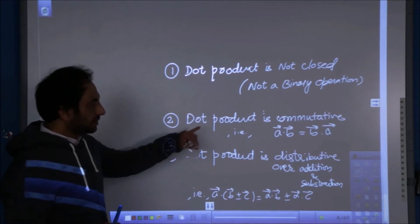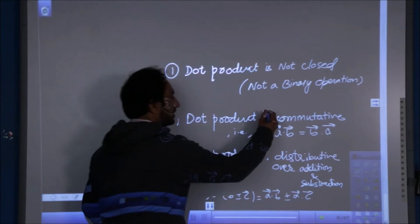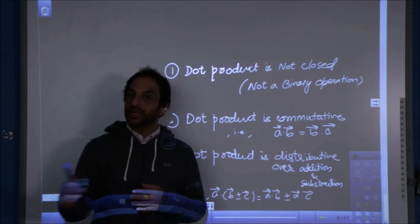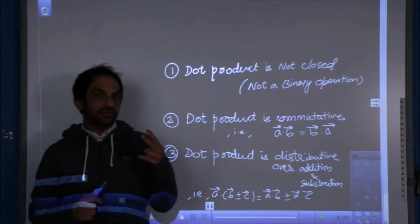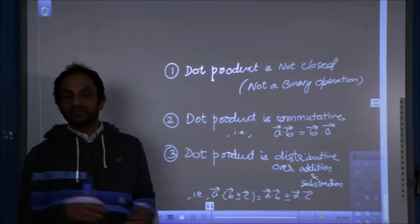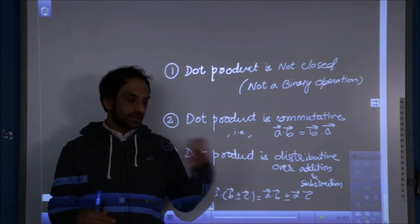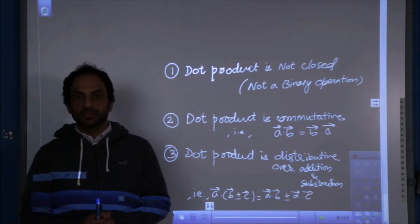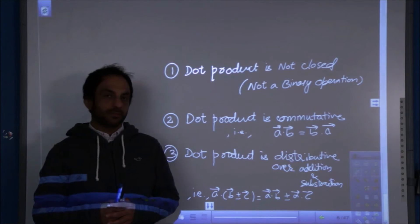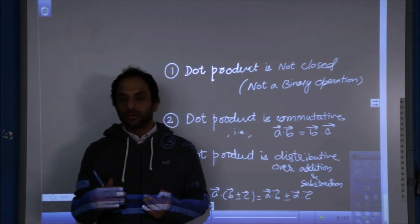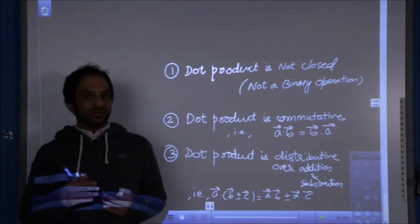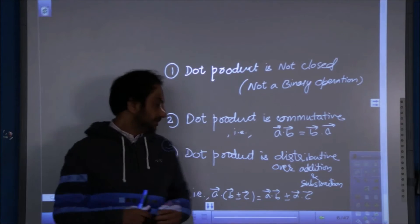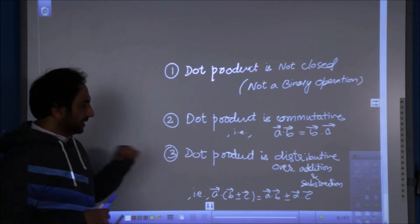Second, the dot product is commutative. When we say commutative, it means we have nothing to do with pre or post. If we have two vectors, we can take any vector as first and the other as second, and the result will be the same — because cos of minus theta equals cos theta.